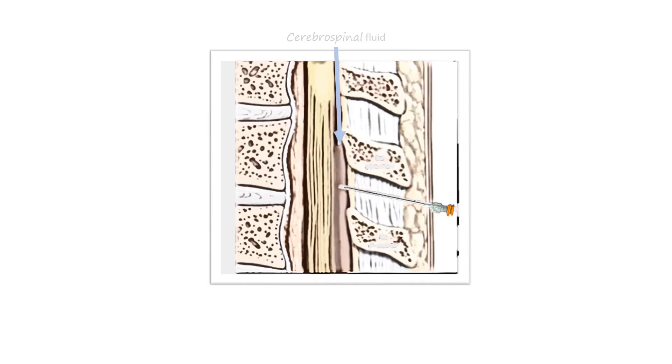There are other options for investigating MS. Examining the cerebrospinal fluid, using a technique called a lumbar puncture, we can see the immunoglobulins those B-cells from earlier were making. We call the pattern that we see in the CSF oligoclonal bands.